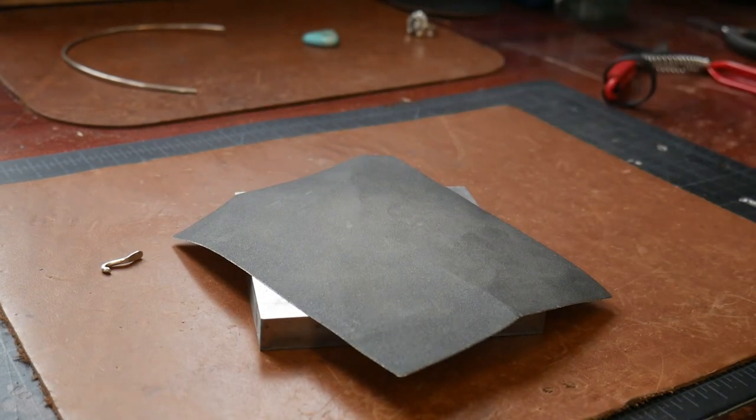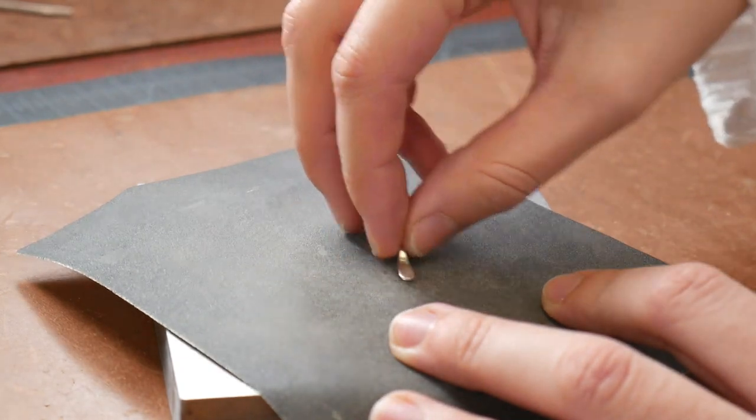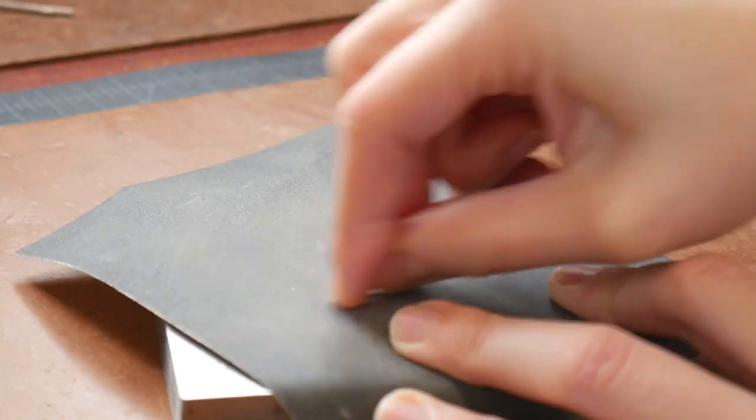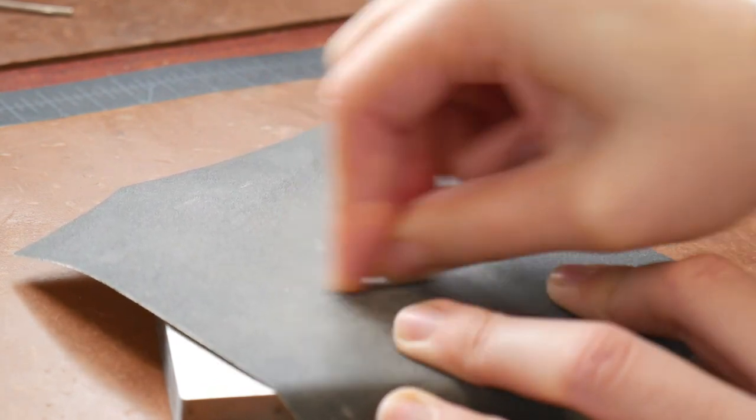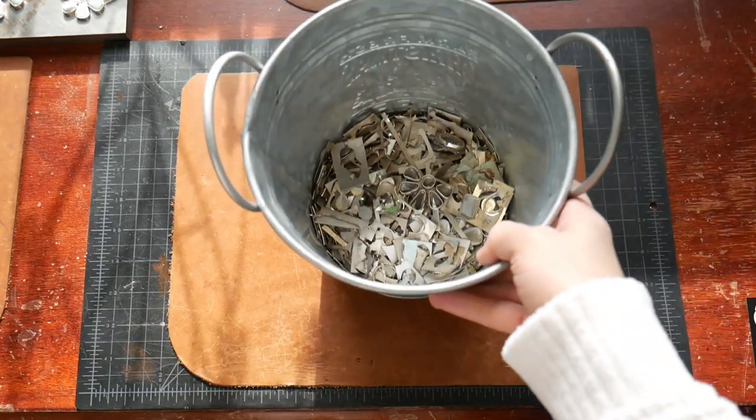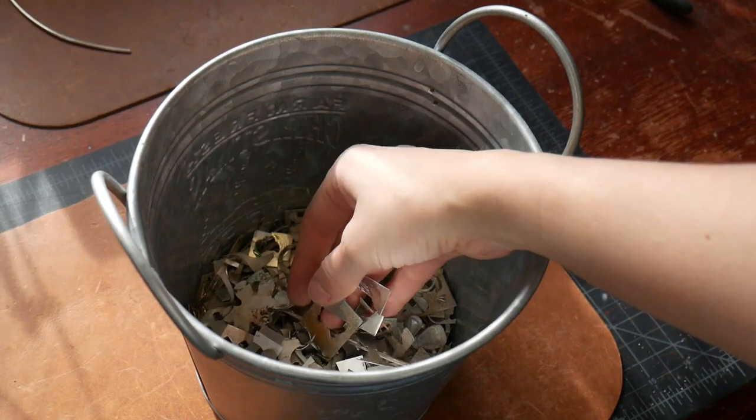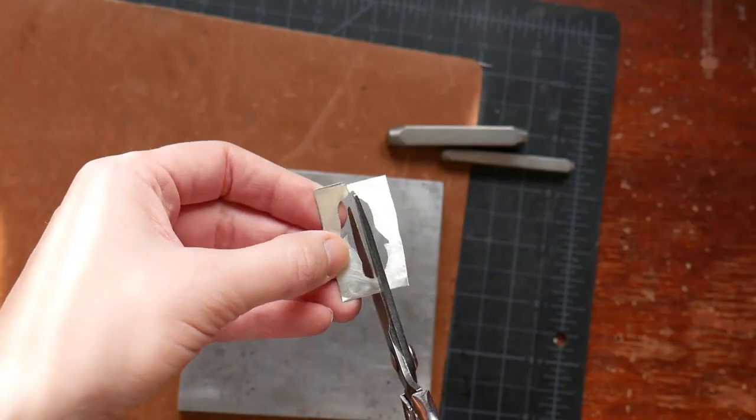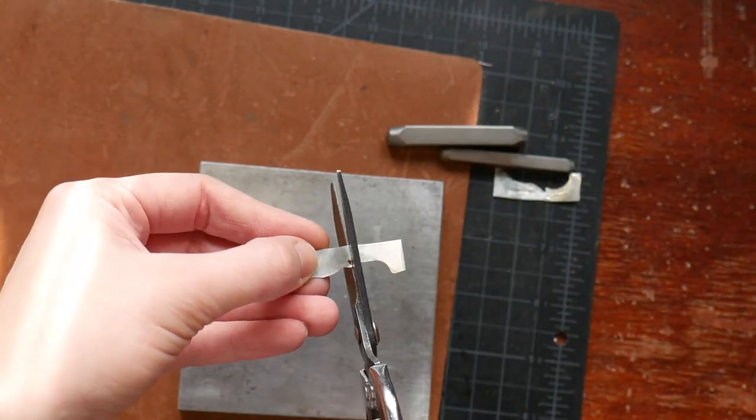Now I'm just going to sand my bail nice and flat before I solder it to the back plate. I want to make sure that there's absolutely no gaps in between the bail and the back plate when I go to solder it down. I'm also going to make my maker's mark, which will be soldered to the back plate as well. I'm just going to be using scrap silver for this part.